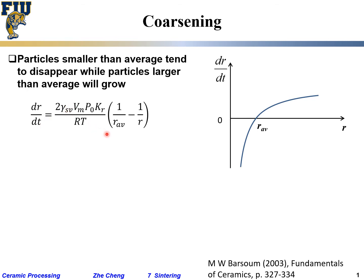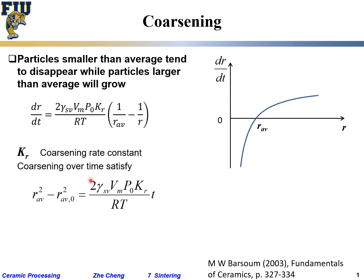On the other hand, if you are larger or smaller than the average radius, the size will change. The k_r is the so-called coarsening rate constant. Coarsening over time satisfies what people generally observe: something like a parabolic relationship.